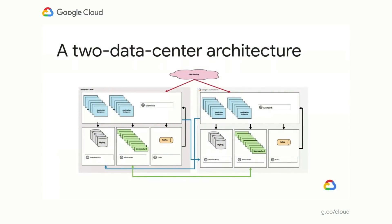So how did we change our architecture and technology to make this kind of move possible? On the left I had the same diagram for our monolithic architecture for our legacy data center. We replicated that in Google Cloud Platform — we had fewer application instances and fewer MySQL instances at the start, and those MySQL instances were empty when we started because there was no data in GCP yet. We had connections from all the application instances to all the MySQLs in both the old data center and in GCP, so it was fully connected between those two data centers — those are the blue lines we had to add.